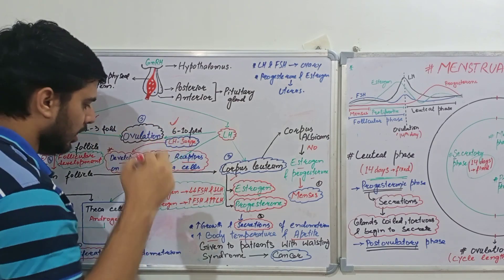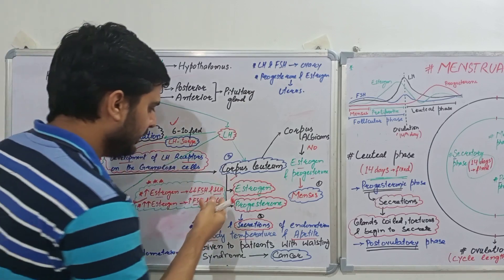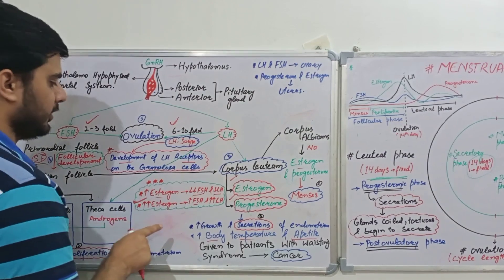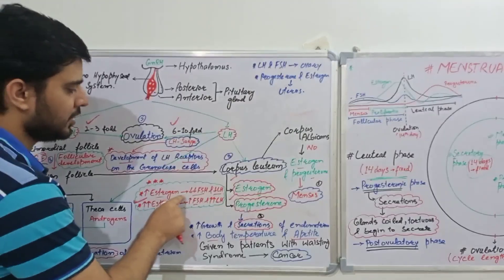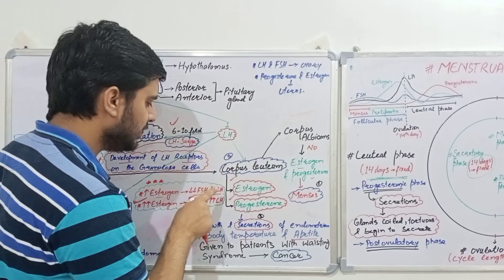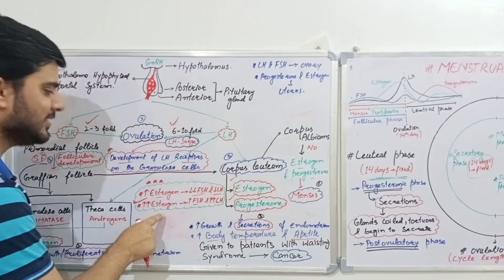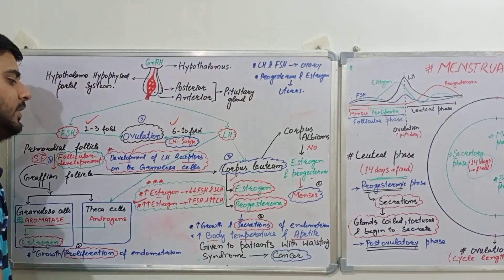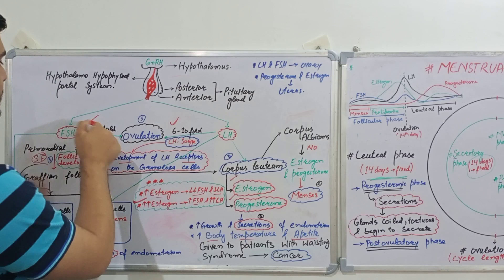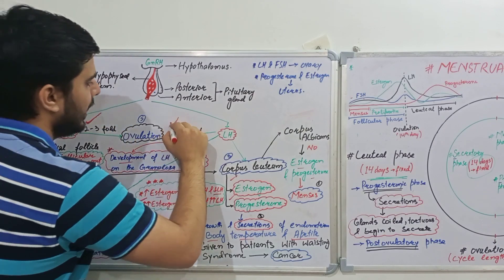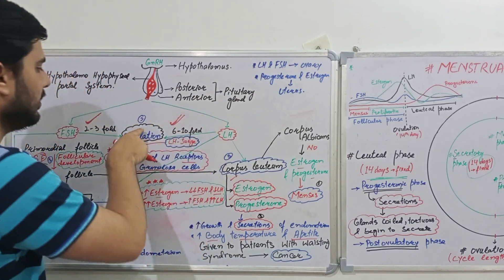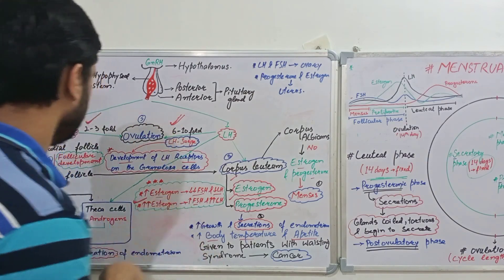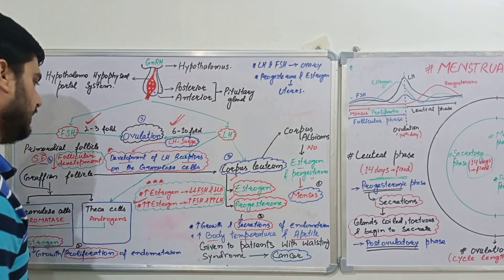When estrogen levels are very high, it stimulates the synthesis of LH more than FSH. So high levels of estrogen inhibit FSH and LH synthesis, but very high levels stimulate synthesis of both. Due to these high levels of both FSH and LH, ovulation occurs. They stimulate proteases which erode the wall of the ovary, and ovulation takes place.